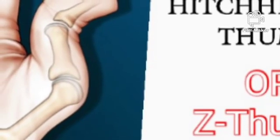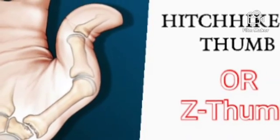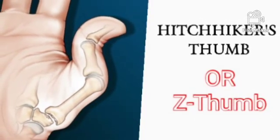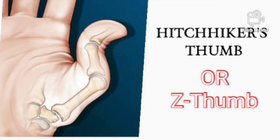Z-thumb deformity: many people know this as pitcher's thumb. In this condition, the MCP joint of the thumb flexes and the interphalangeal joint of the same thumb hyperextends. In addition, the trapeziometacarpal joint of the same thumb slightly dislocates, leaving the thumb in a deformity exactly as indicated on the screen.